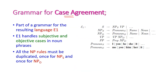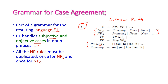The grammar for case agreement uses rules for language E1. E1 handles the subjective and objective cases in noun phrases. The noun phrase rules are duplicated for subjective as well as objective. For the pronouns, some words change between subjective and objective: I changes to me, he changes to him, she changes to her, etc.